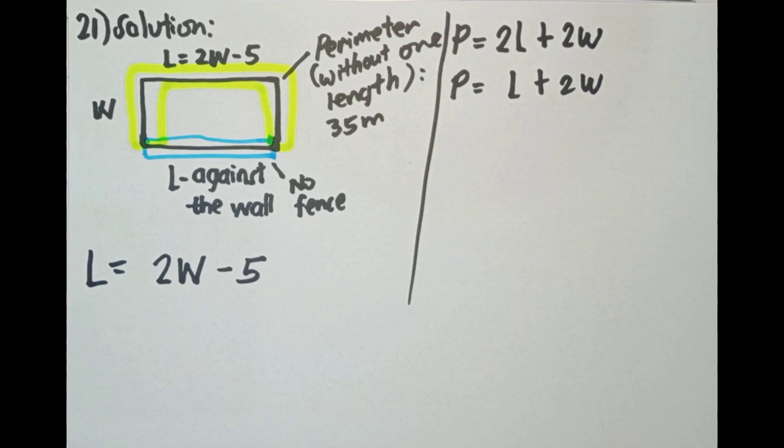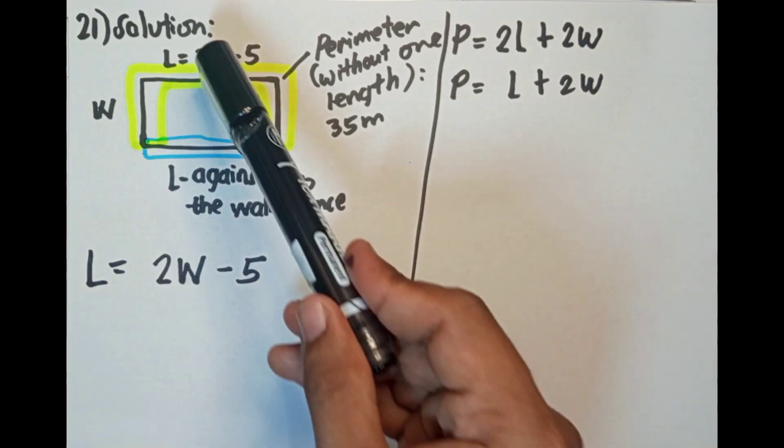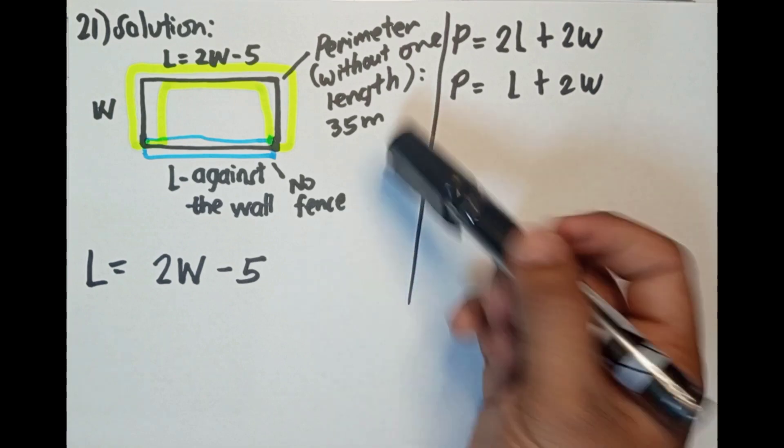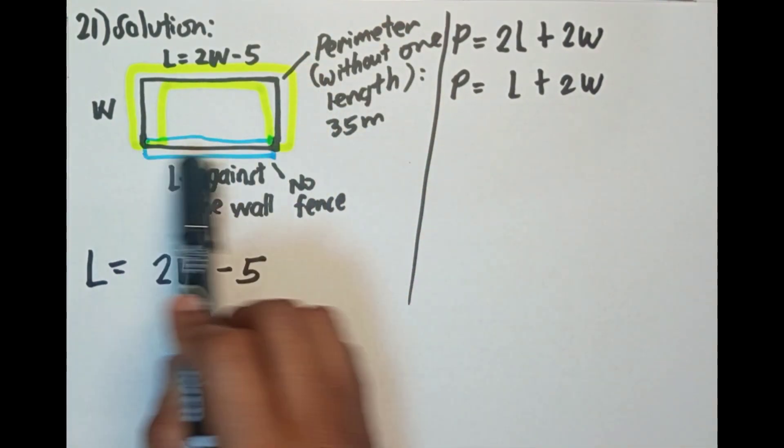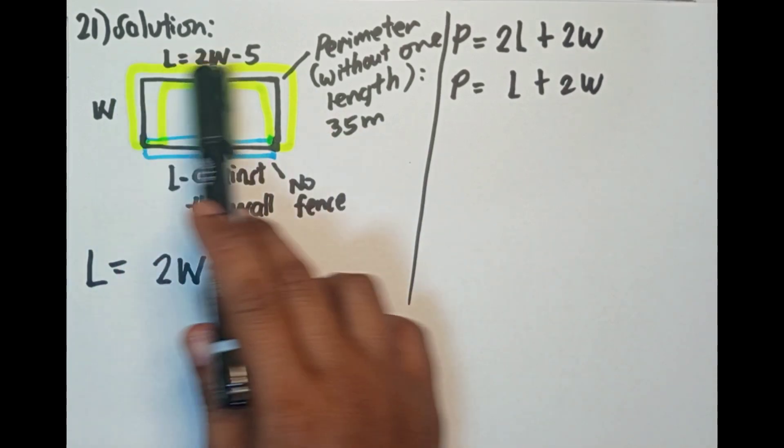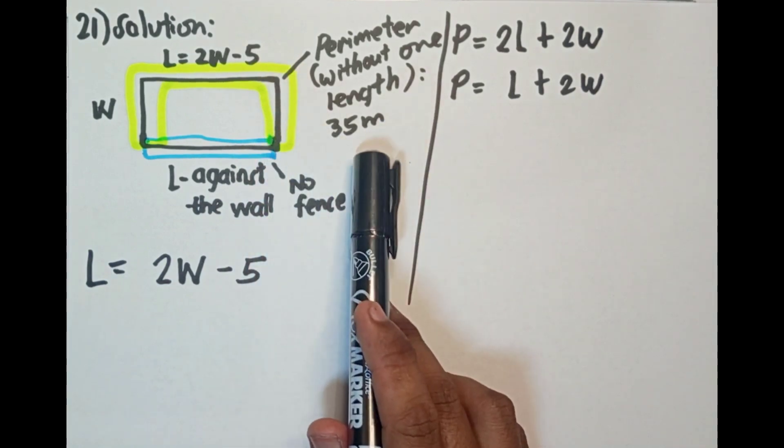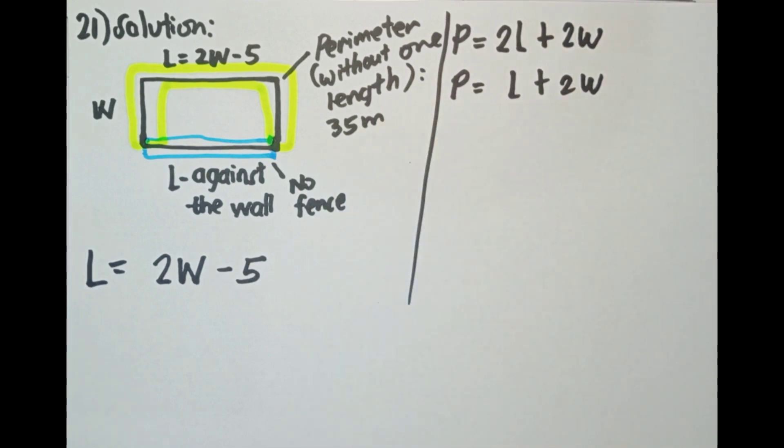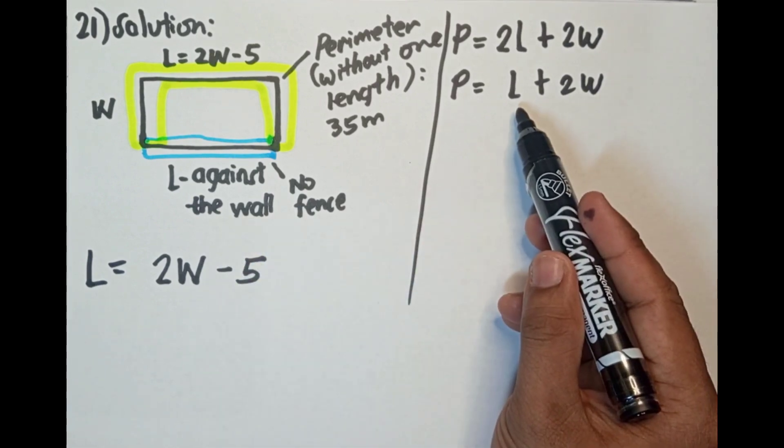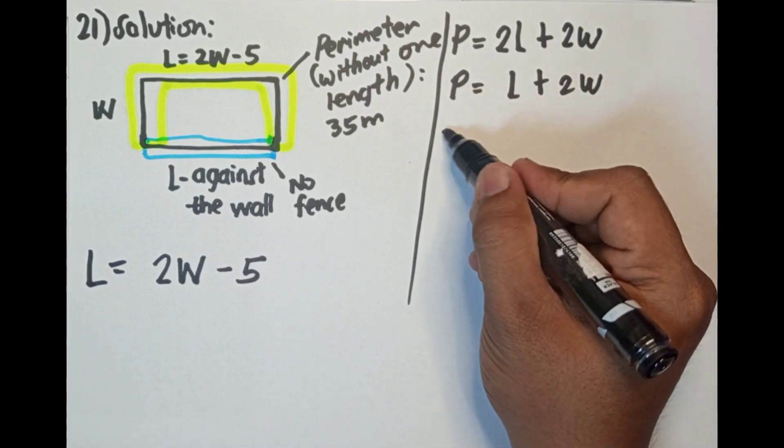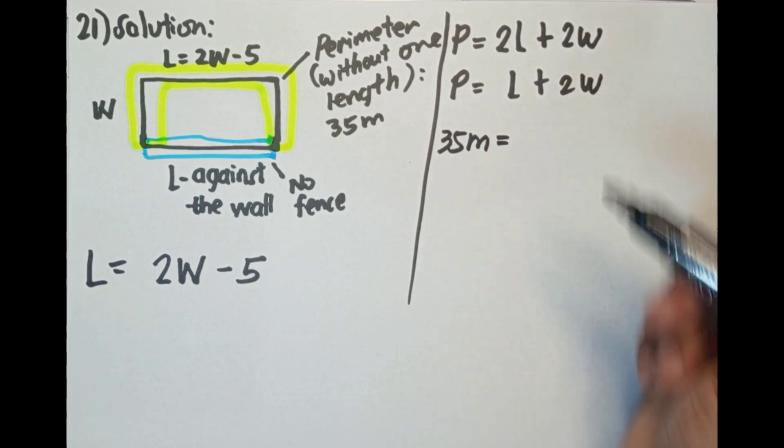Yung tinatanong, find the dimensions of the lot. Alamin natin kung anong dimension, L times W, kung 35 meters daw yung nagamit na fencing material. Nakita nyo, perimeter. This is the perimeter, diba? 4 sides sana, pero may wall kasi dito sa blue na to. Kaya yung tatlo na lang yung sinabi na 35. Yung fencing material na ginamit is 35 meters. So ang gagawin natin dito guys, ito yung originally na formula ng rectangle. Pero dahil nga may yung isang side ay may wall, so isang L lang yung gagamitin natin dito. Yung alam natin yung P, 35 meters.